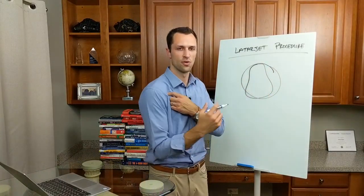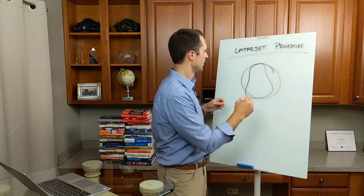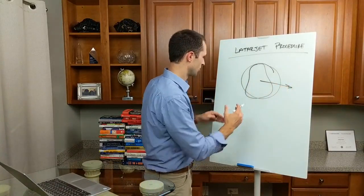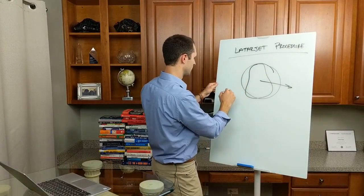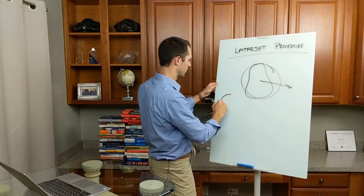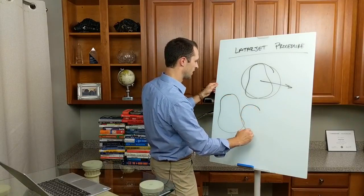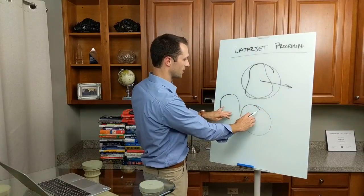If I dislocate my shoulder anterior inferior, that means the humeral head here dislocates in this direction. So it's going to dislocate from the glenohumeral joint or from the glenoid. So here it is, and then you've got the humeral head out here. So I'm dislocated.